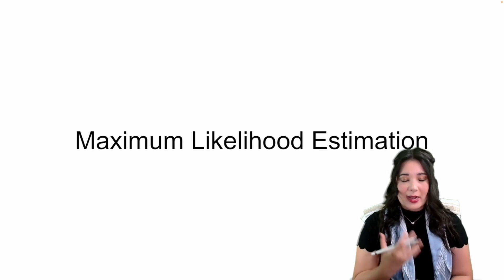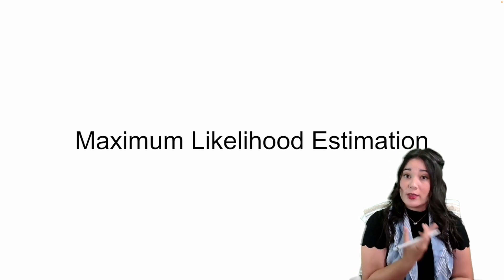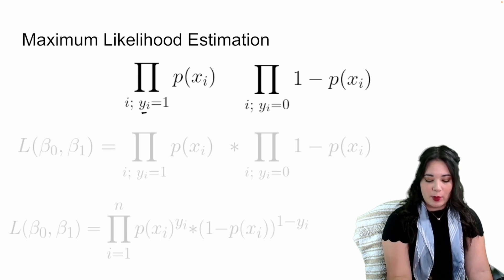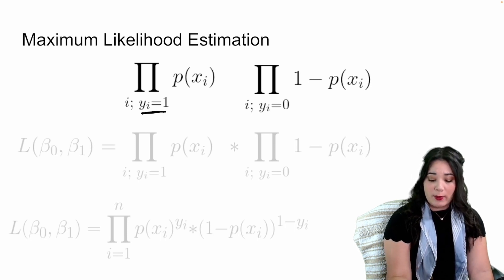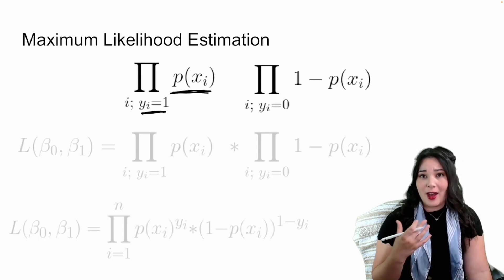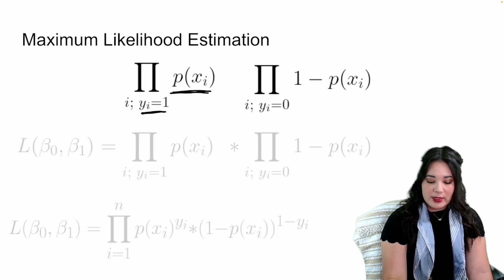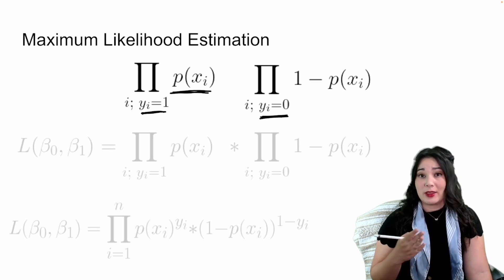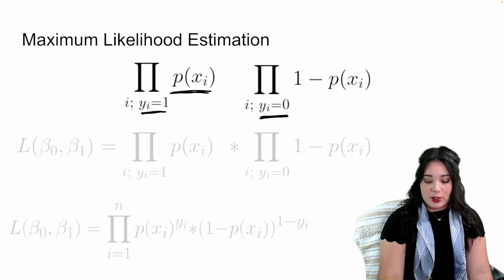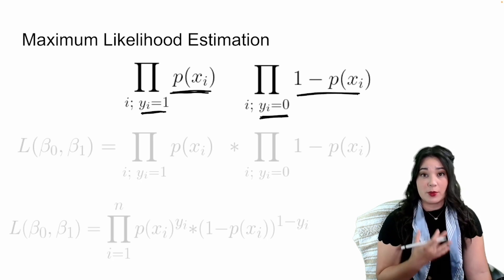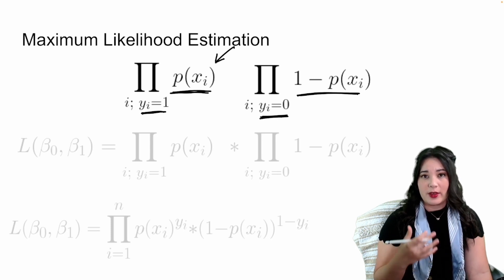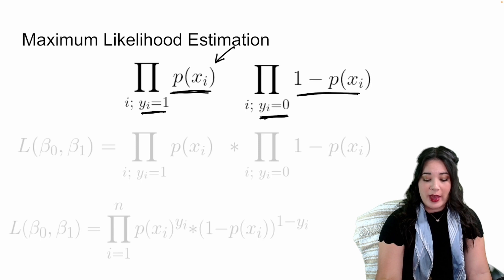The first method should look familiar: maximum likelihood estimation, just like we talked about with linear regression. When our data point is in group one, we want the probability of being in group one to be high — very close to one. For data points in category zero, we want the predicted probability of being in category one to be really low — we want one minus that probability to be very close to one. We want to choose parameters like our intercept or coefficients to make probabilities as high as possible for category one and as low as possible for category zero.